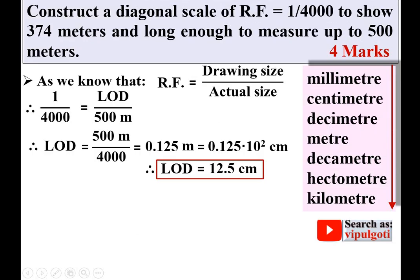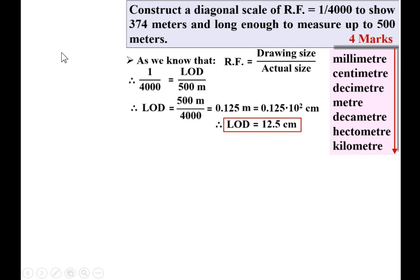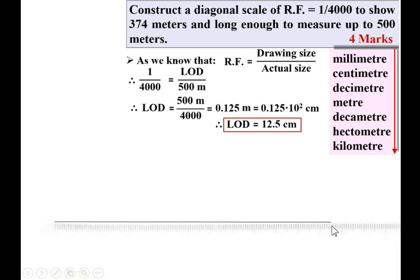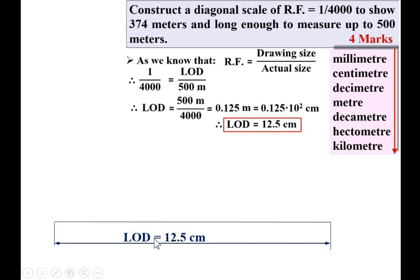Now draw a horizontal line of 12.5 centimeters — that is 12 centimeters and 0.5 centimeters. Give the dimension using the aligned system or unidirectional method. The extension lines and the dimension line are marked accordingly. Then draw a vertical line, generally taken as 5 centimeters or 50 mm, and complete the rectangle.